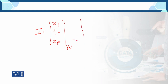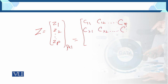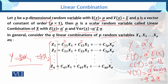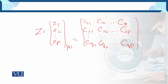Similarly, the constant values form a matrix: row 1 is [c11, c12, ..., c1p], row 2 is [c21, c22, ..., c2p], and the last row is [cq1, cq2, ..., cqp]. This matrix C has q rows and p columns — a q×p matrix.